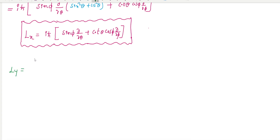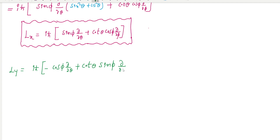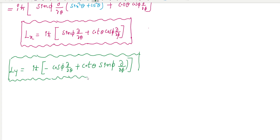So for LY, you can try to put all these things and you get the result. Similar to the other derivation. So here I am going to write the final equation: LY equals iħ times minus cosφ ∂/∂θ plus cotθ sinφ ∂/∂φ. Similar procedure you follow, you can get this very easily. If you cannot get it, please leave me a comment below and I will send my notes.